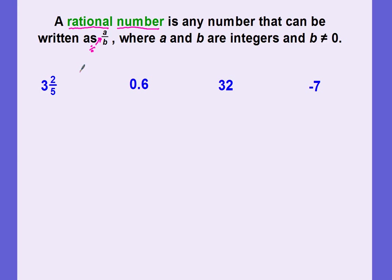We've already learned what integers are. We know that integers are whole numbers and their opposites — so they're positive and negative whole numbers and zero.